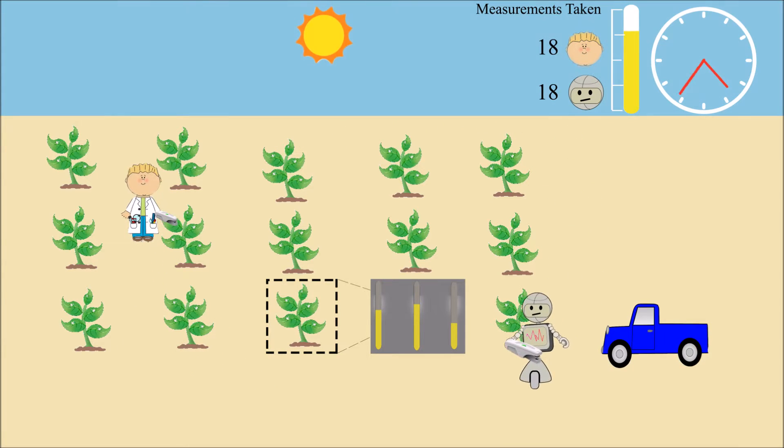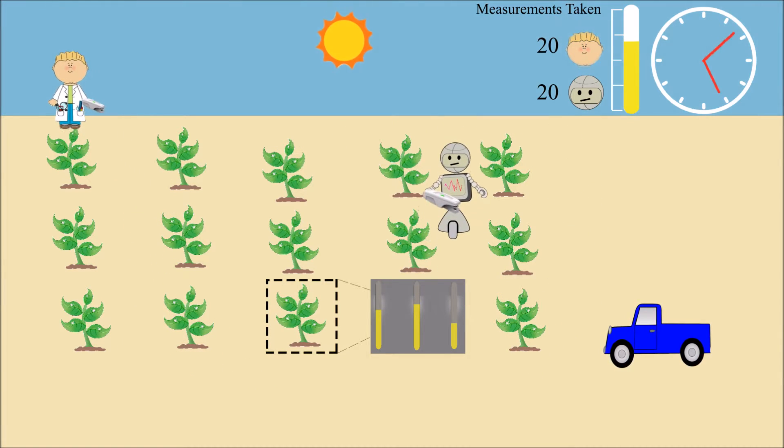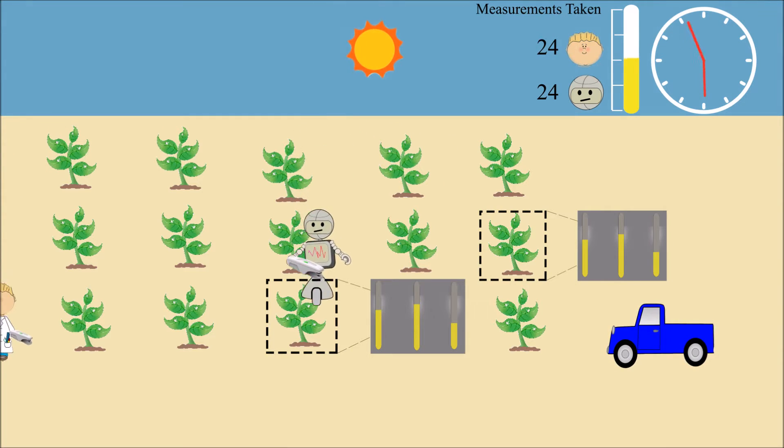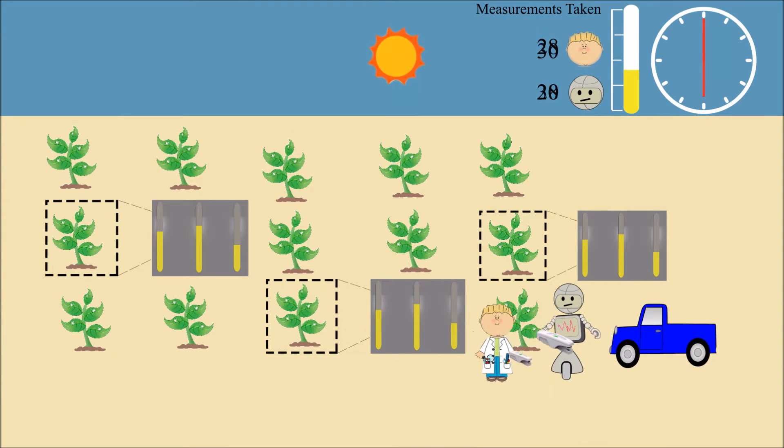Because each plant was measured at two different light intensities and times of day, the average light conditions of plants from different parts of the field were closer than in the previous example.